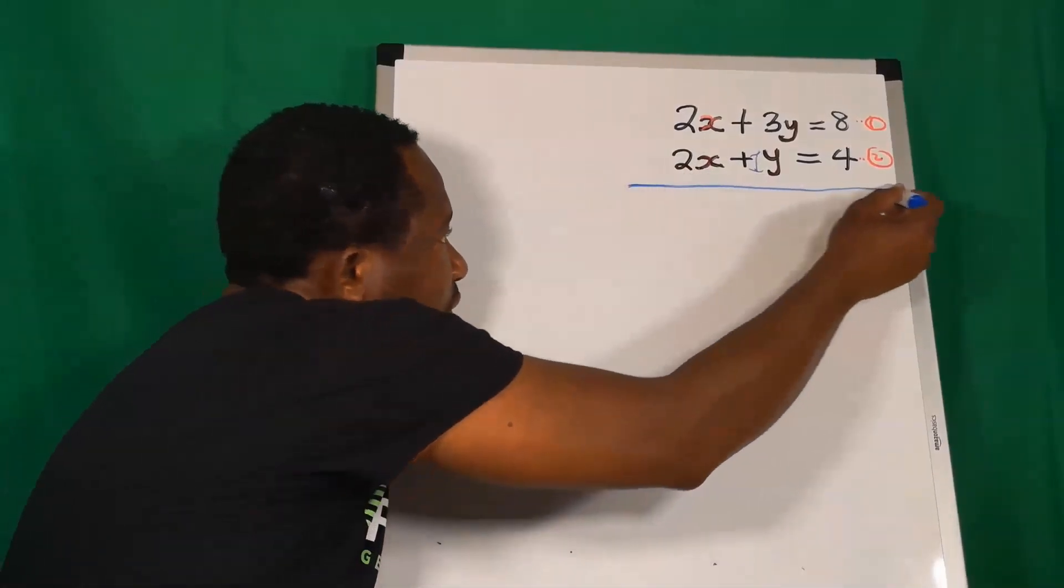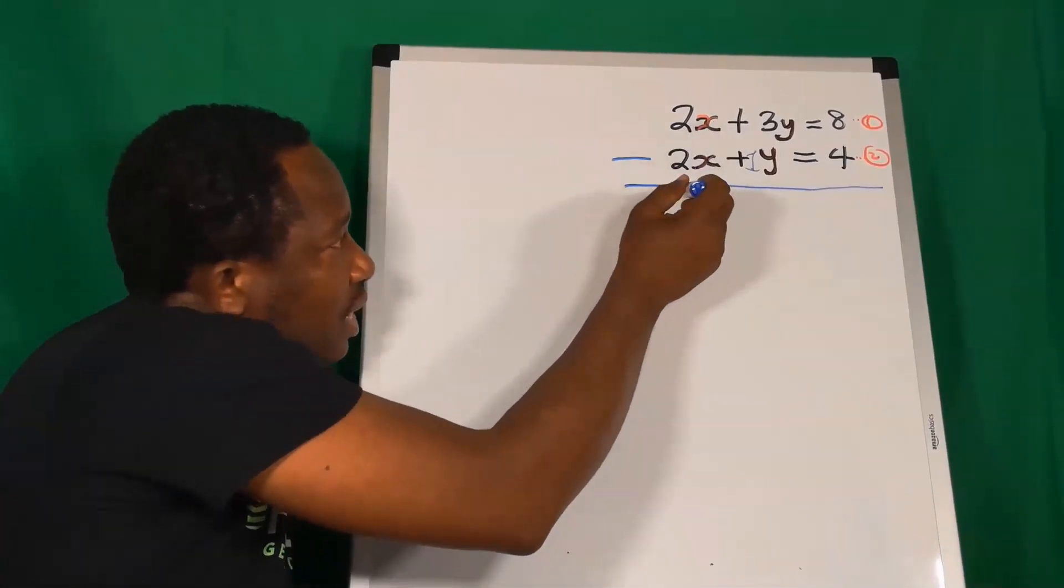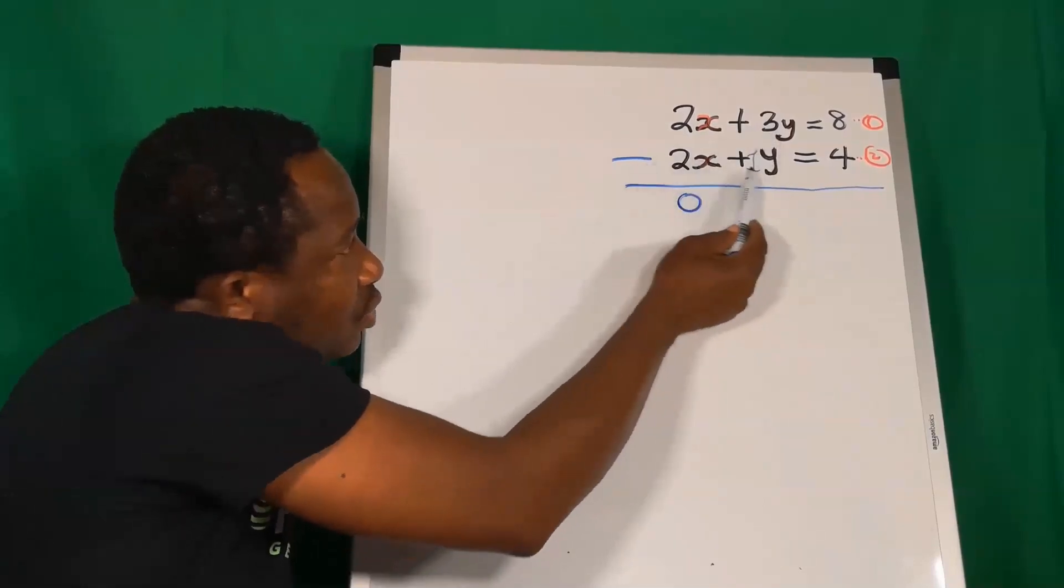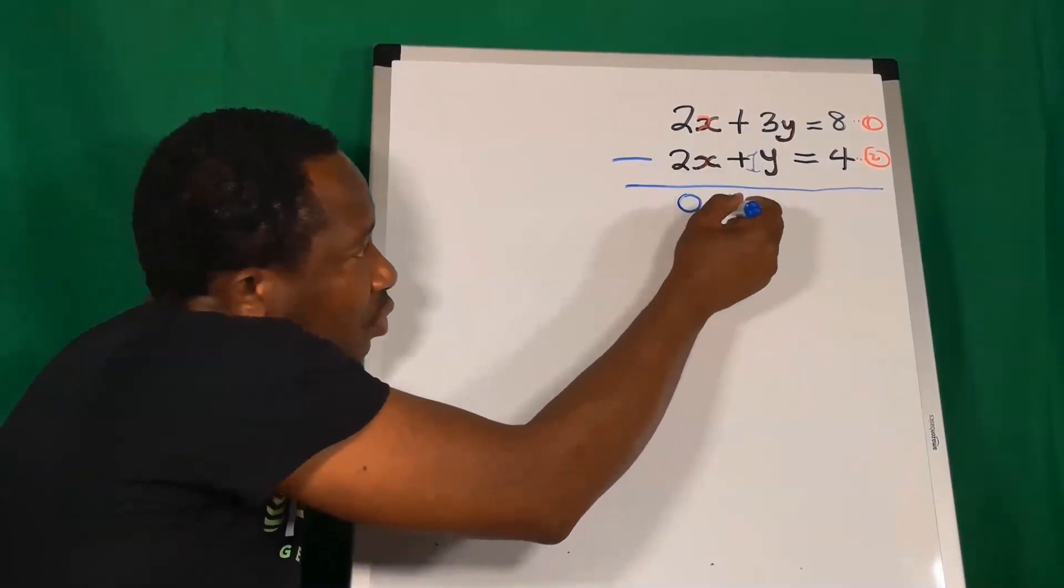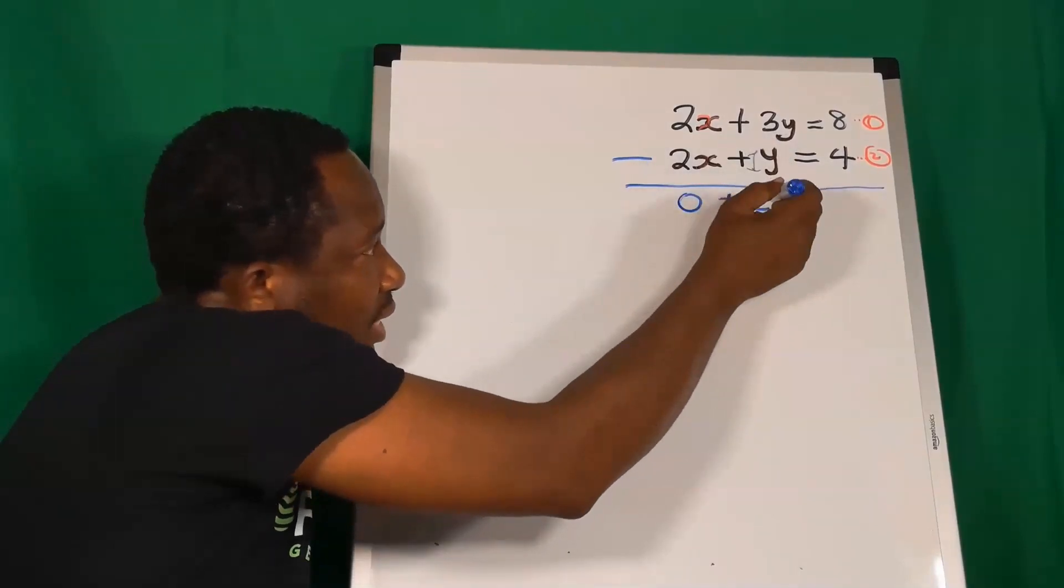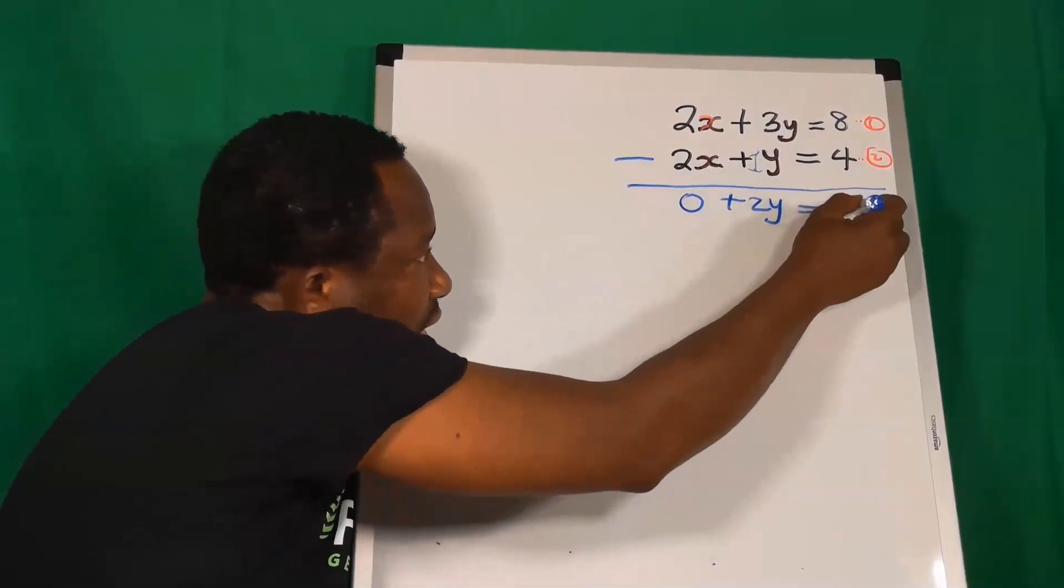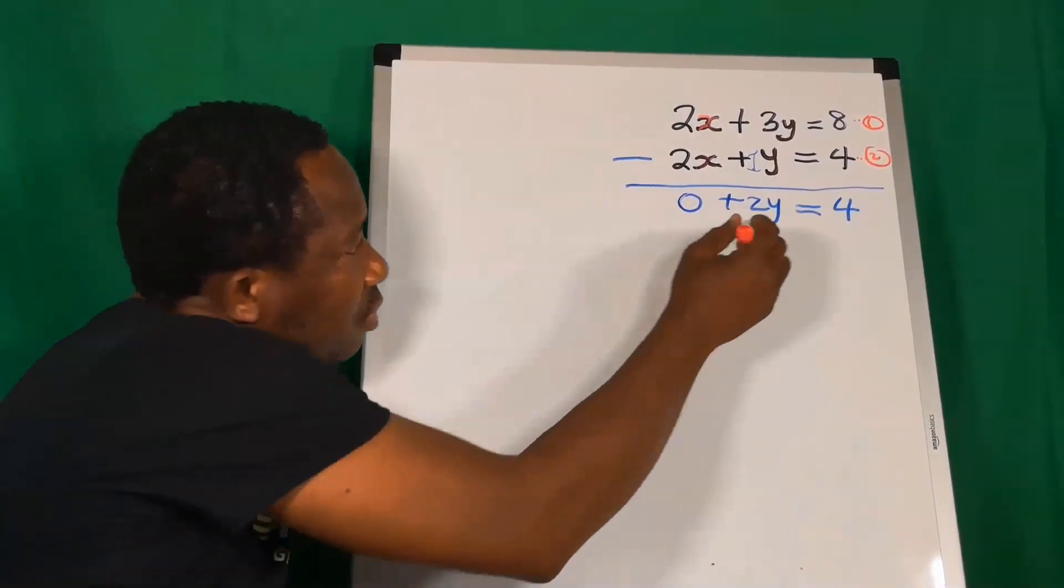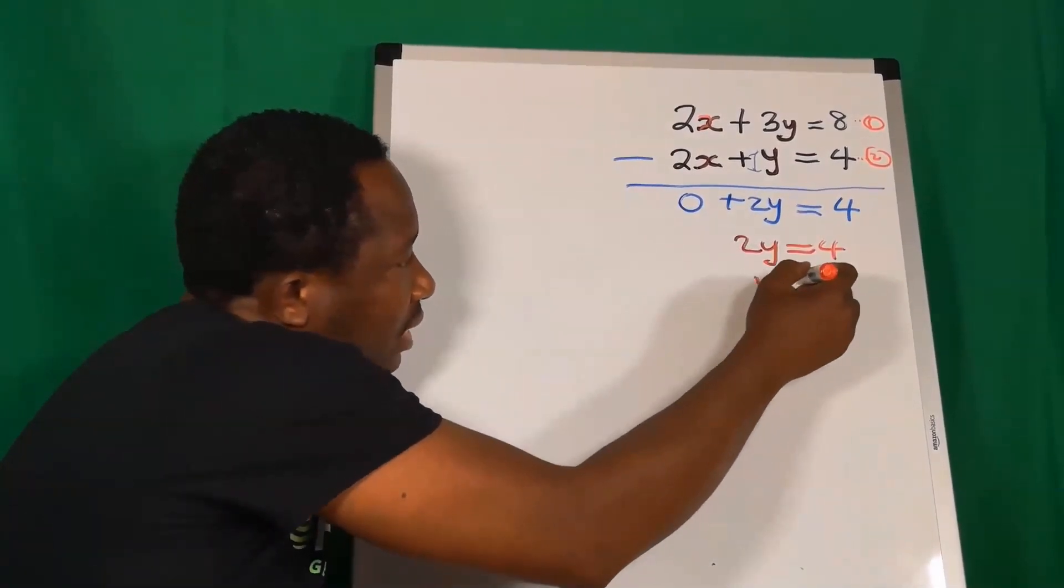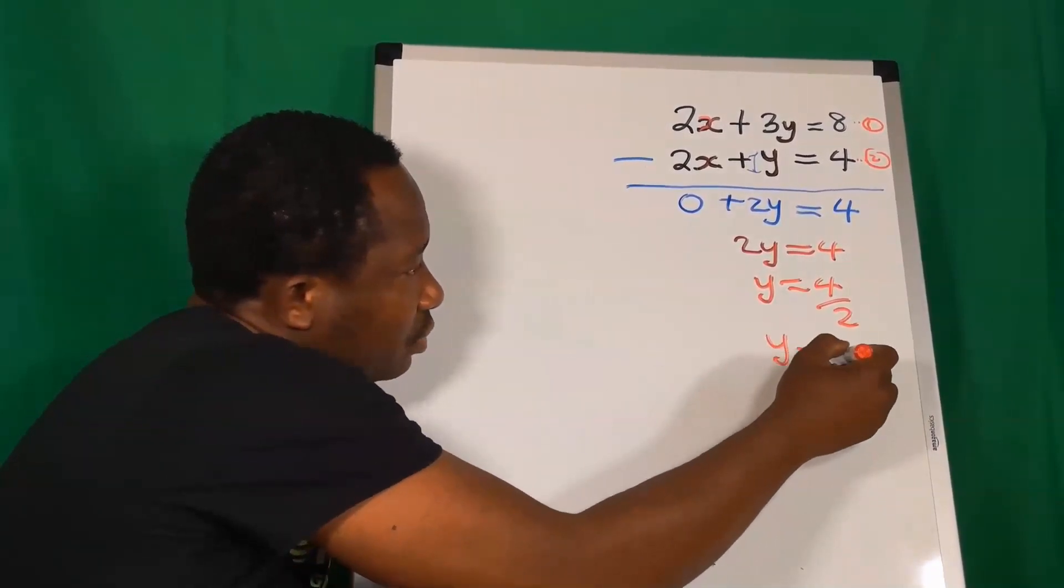Hence, we are going to subtract by elimination. 2x minus 2x is 0. 3 minus 1 will give you plus 2. 3y minus 1y is 2y and 8 minus 4 is 4. Next, we are going to have that 2y is now 4. Y is now 4 divided by 2 and y is now 2.